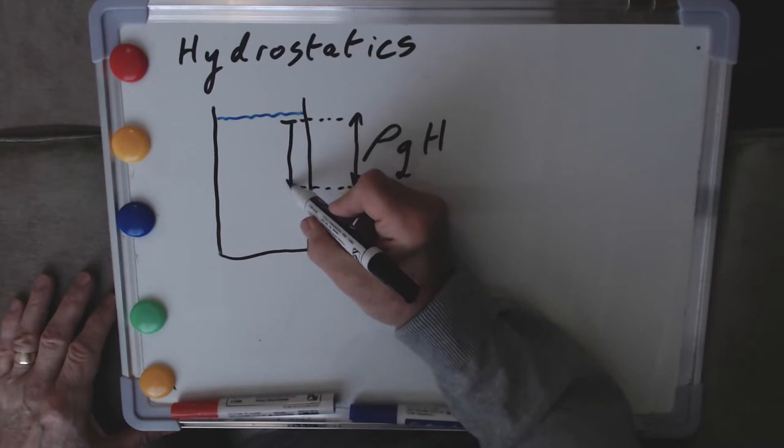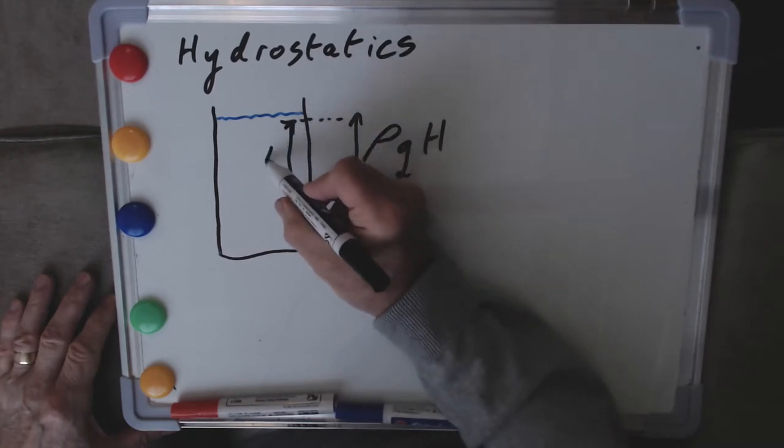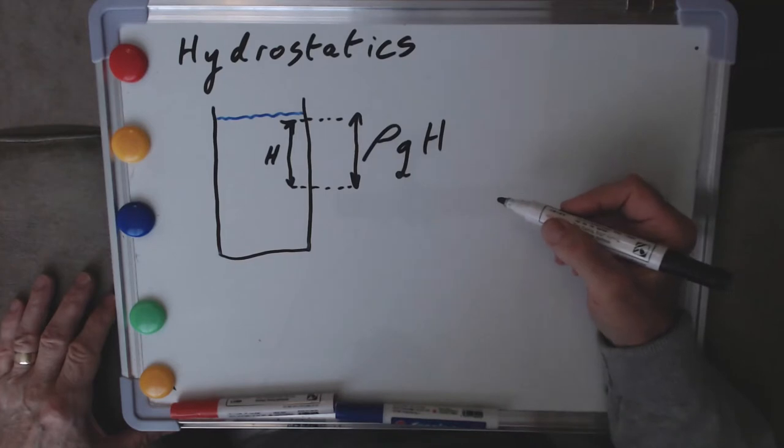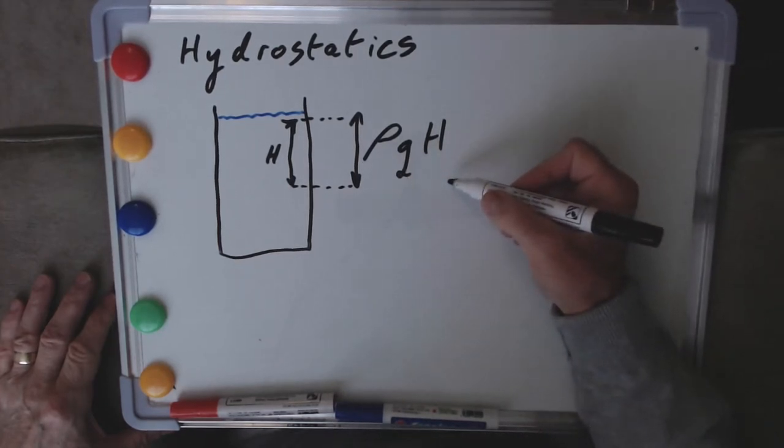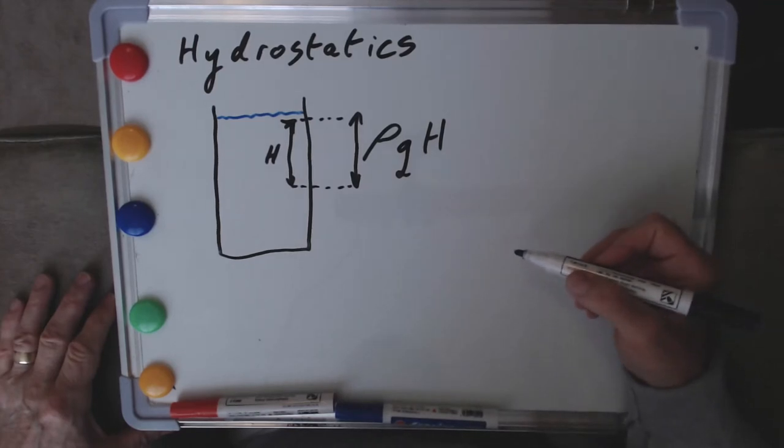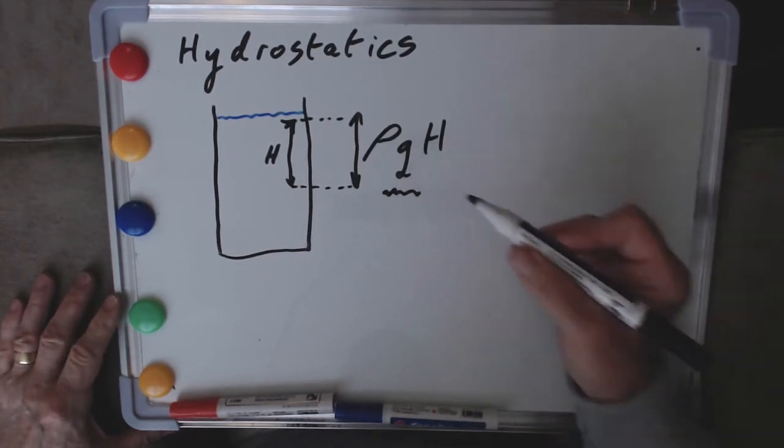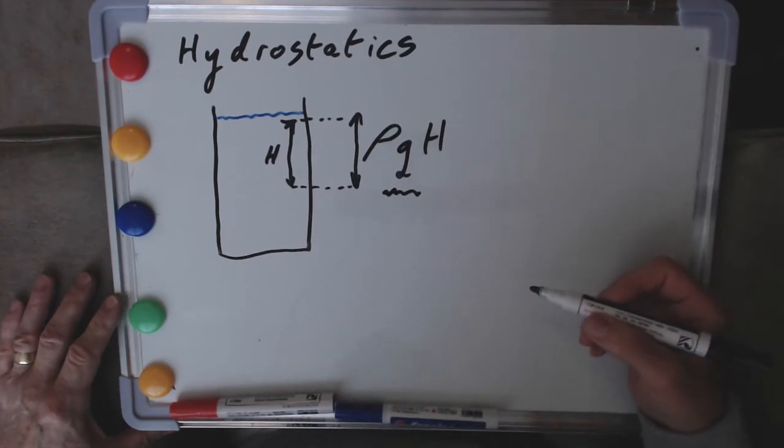So between one level and another, the difference in those heights is h in this equation. That tells us the pressure difference, and it's this fact that's going to drive the siphon in our WC. It's all driven by gravitational attraction as we shall see.